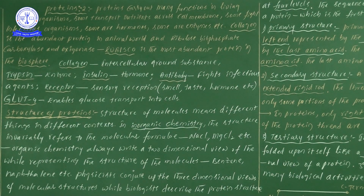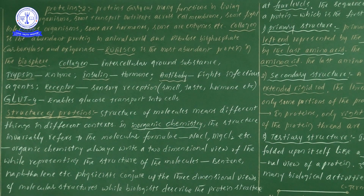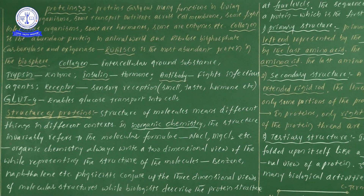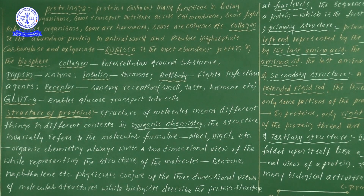Collagen is the abundant protein in the animal world, and in plants — which we consider as autotrophs capable of performing photosynthesis — Rubisco enzyme is present. In photosynthesis, Rubisco enzyme is required for the absorption of atmospheric carbon dioxide. Also, GLUT4 is important — GLUT4 enables the glucose transport into the cells.